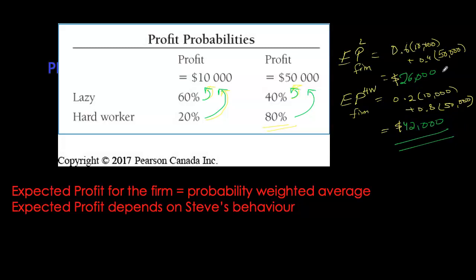As shareholders, you obviously want the hard-working outcome and not the lazy one. So how do we ensure Steve is always putting in maximum effort? If we give the manager a fixed pay not tied to his effort, it's more likely Steve will not be pushed to pursue higher profits. However, if we tie his payoff to his performance at the firm, we can induce Steve to work a lot harder. The idea is to give Steve some percentage of profit tied to the profitability of the firm.